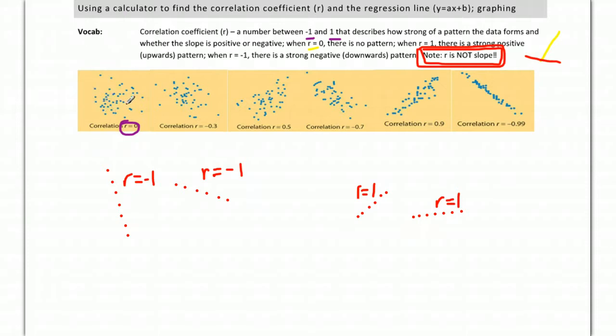Here's one where you can kind of see a slight pattern forming, just barely a pattern forming, and it's a downward pattern, so negative, let's say 0.3. Here you have some kind of positive slope, but again the pattern isn't super strong, maybe 0.5.